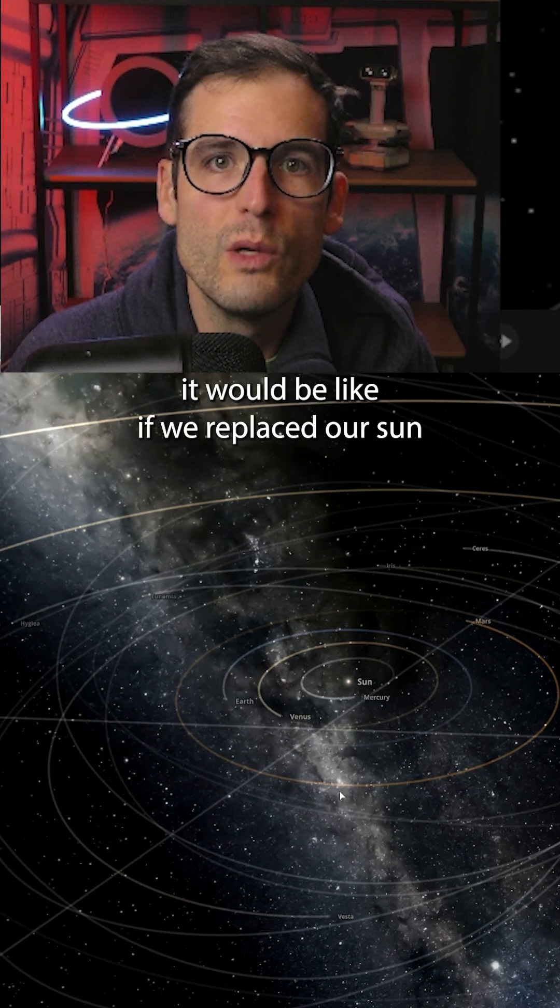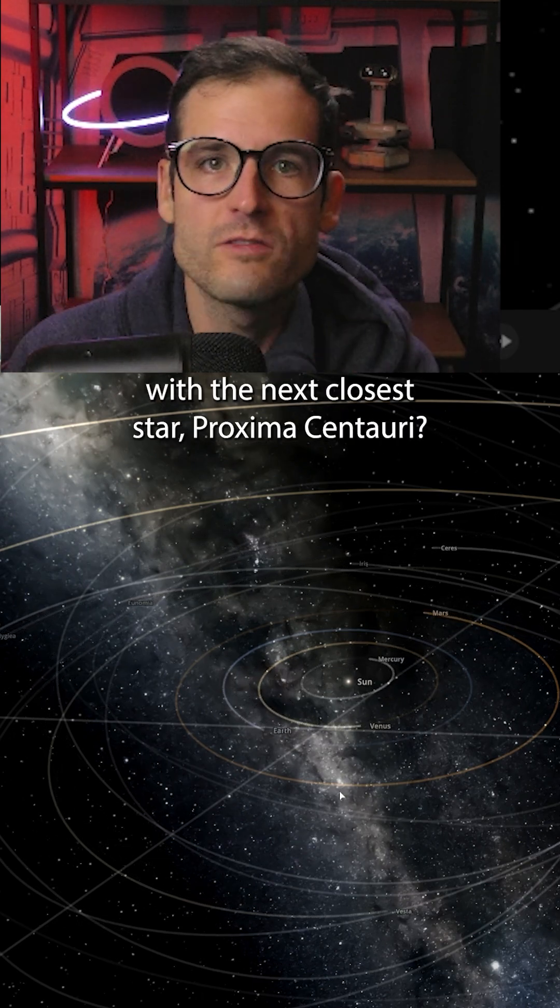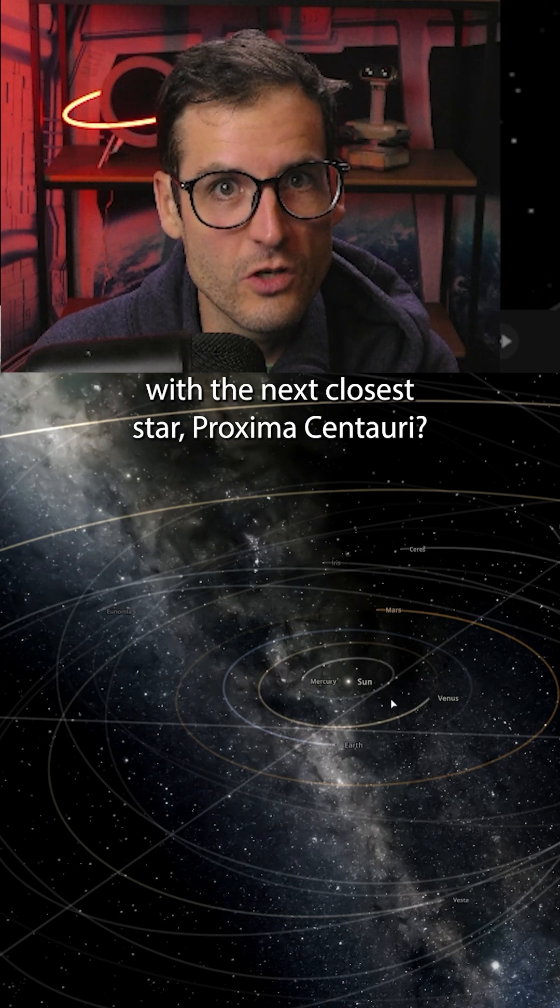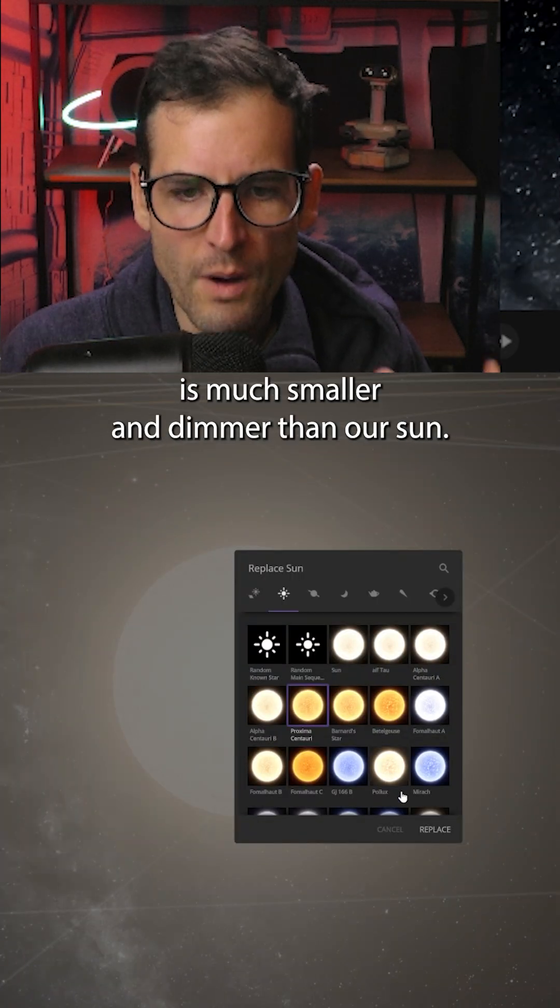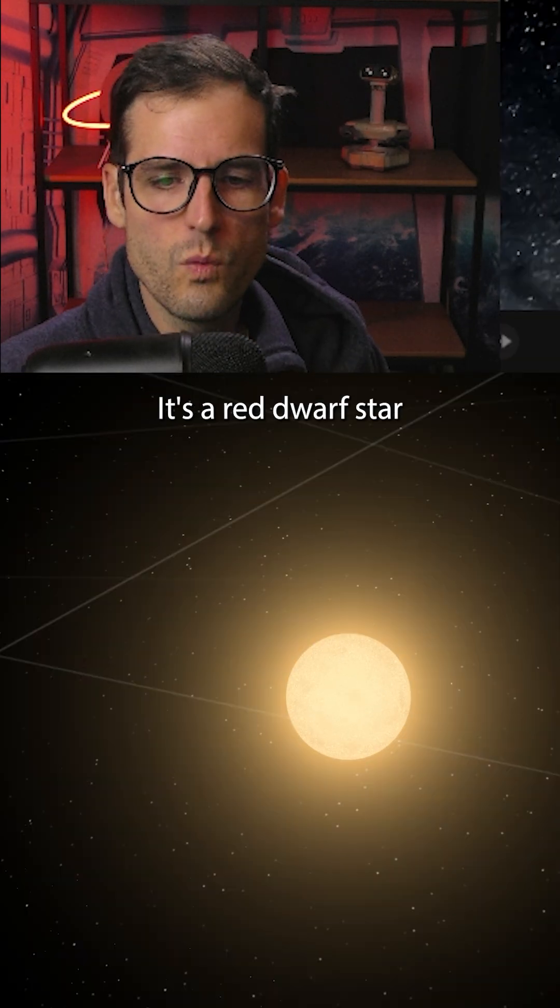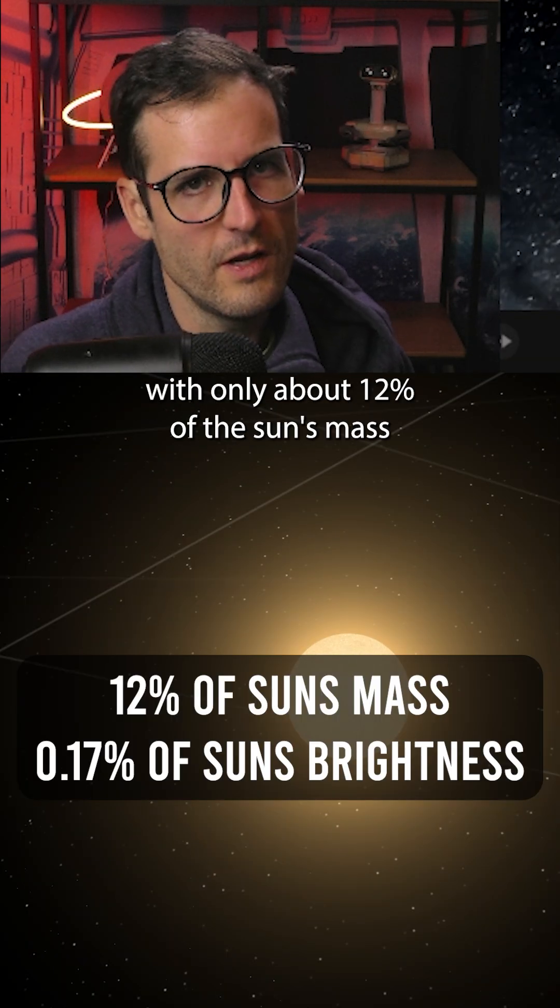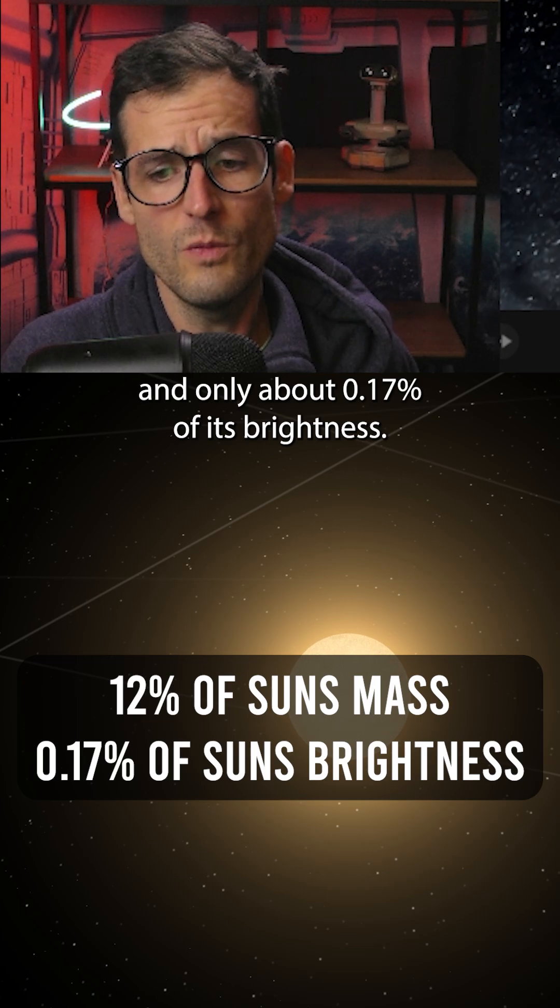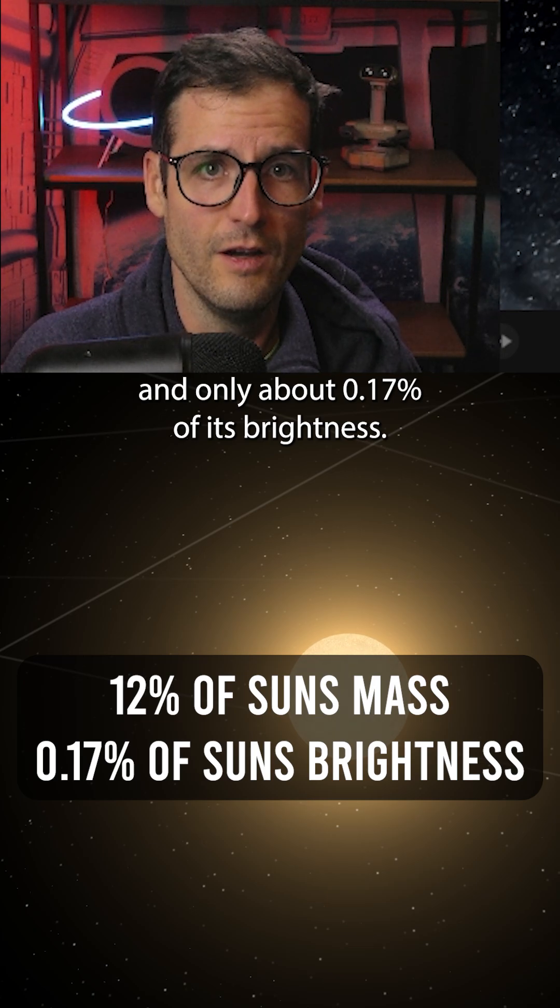Have you ever wondered what it would be like if we replaced our sun with the next closest star, Proxima Centauri? Proxima Centauri is much smaller and dimmer than our sun. You cannot see it with the naked eye. It's a red dwarf star with only about 12% of the sun's mass and only about 0.17% of its brightness.